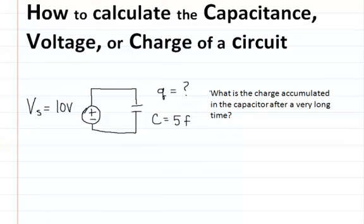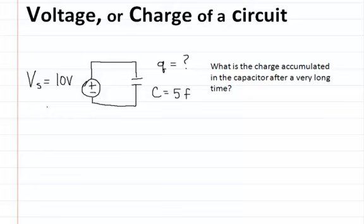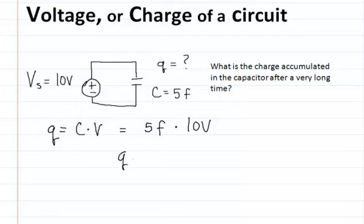In the first problem: what is the charge accumulated in the capacitor after a very long time? We have a capacitor, and we want to find out what the charge is. We know the capacitance and the voltage. The equation is: charge is equal to the capacitance multiplied by the voltage. So with a capacitance of 5 farads multiplied by 10 volts, the charge on the capacitor after a very long time is equal to 50 coulombs.